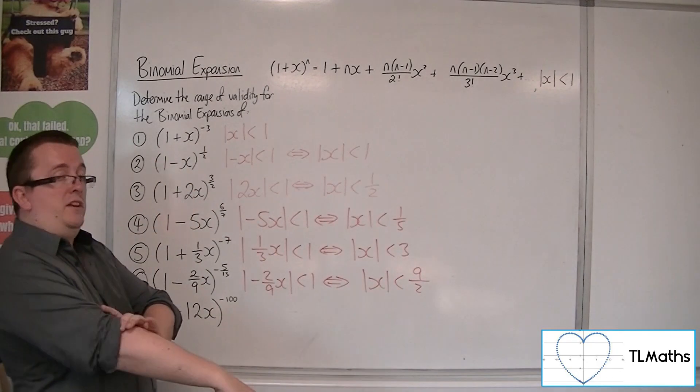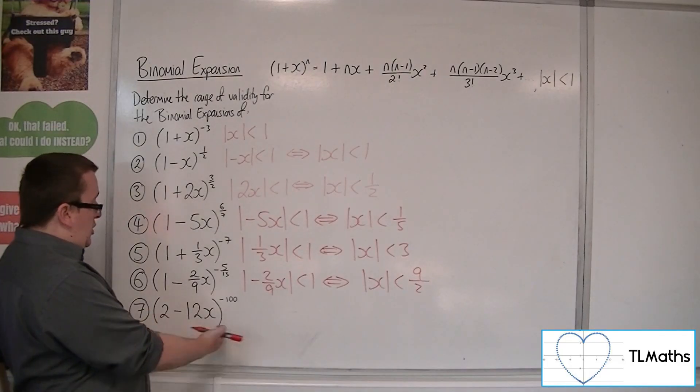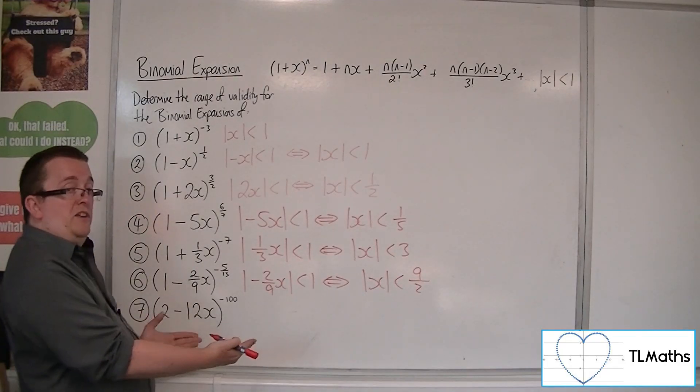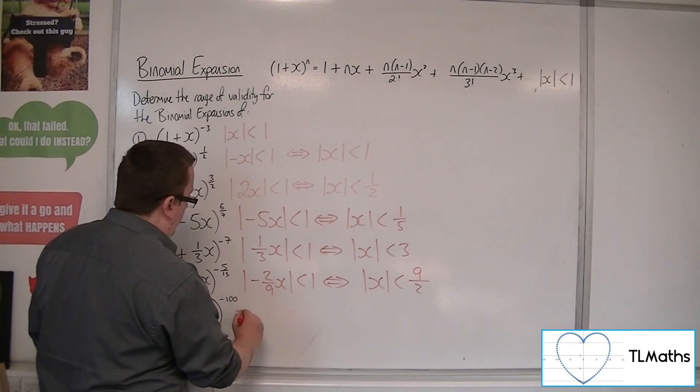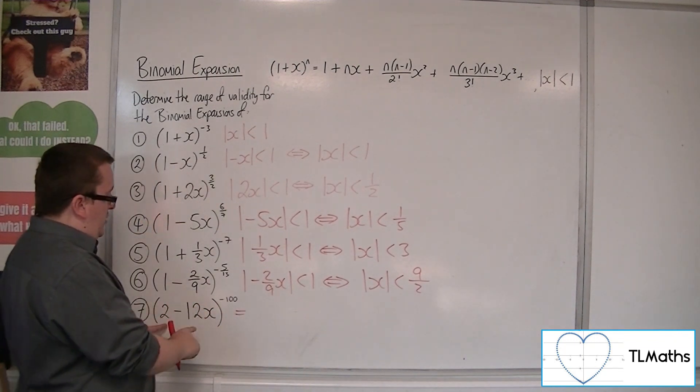So |x| < 9/2. Then finally, (2-12x)^(-100). Now for this, you've got to sort out the 2 first.